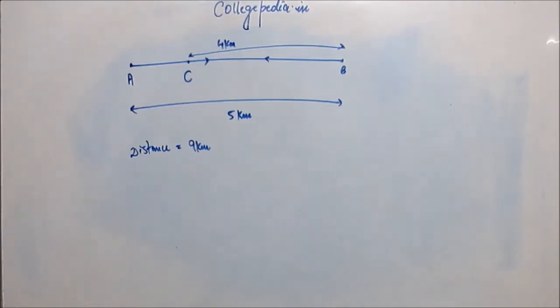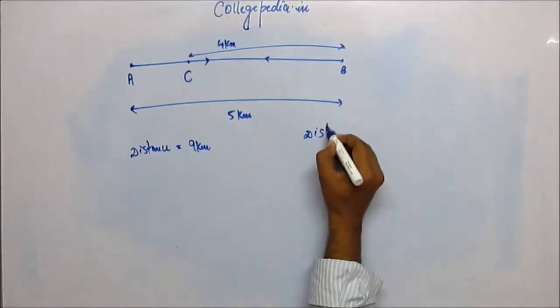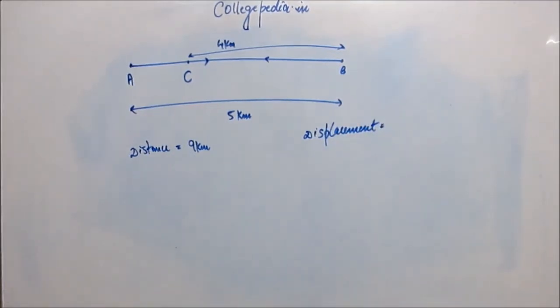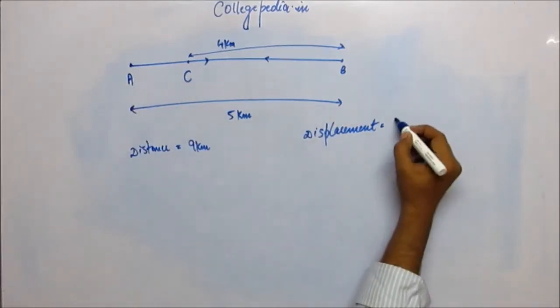Displacement—as you must be knowing—displacement is defined as the straight line distance between initial point and final point. In many situations we are concerned only with the initial and final position, not bothering much about what goes in between. So there's a need for defining such a quantity. Displacement is defined as the straight line distance between initial and final position. Initial position is A, final position is C. Straight line distance between A and C is 1 kilometer.